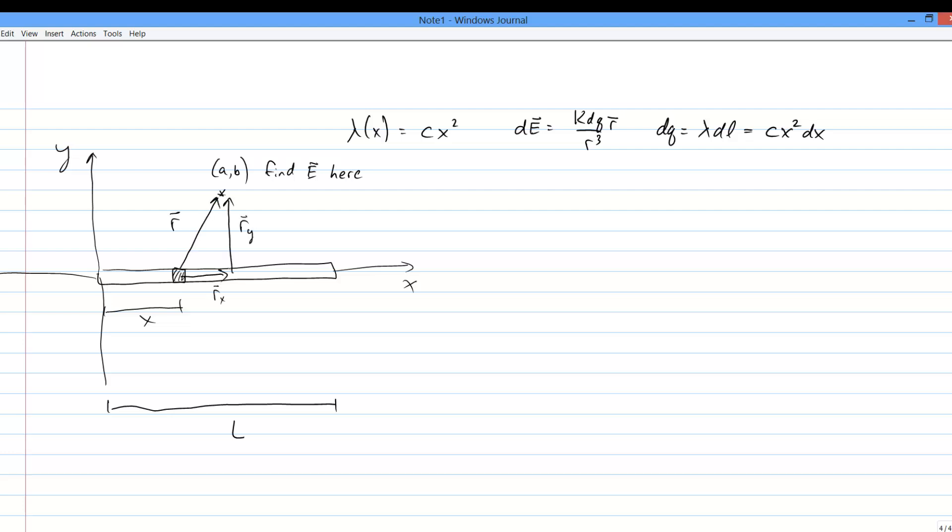Remember, the r vector points from the source dq to the observation point, the place we're finding the field. The vertical component of r points up, and is the same length no matter which dq we consider.